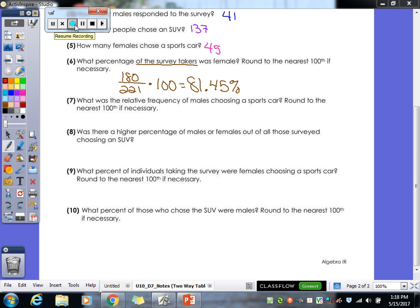Next one: What was the relative frequency of males choosing a sports car? Since it says of males, that means this time it's going to be out of 41 because there was only 41 males that responded to the survey. How many of those 41 chose a sports car? 39 of them did. So it's 39 divided by 41 and then times a hundred. So let's see what we get. 95.12%.